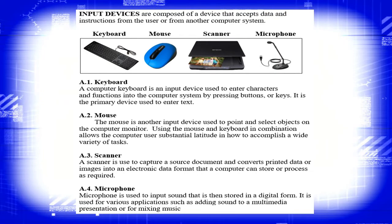Let's talk about input devices. Examples include keyboard, mouse, scanner, and microphone. Input devices are composed of a device that accepts data and instructions from the user or from another computer system. A computer keyboard is an input device used to enter characters and functions into the computer system by pressing buttons or keys — it is the primary device used to enter text.